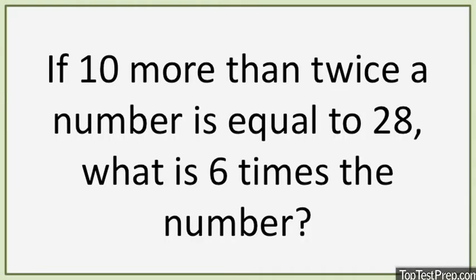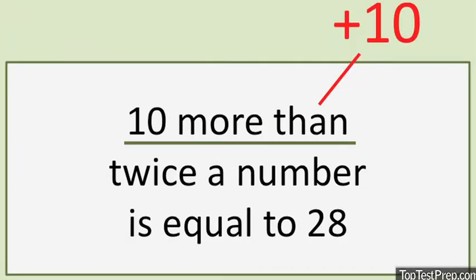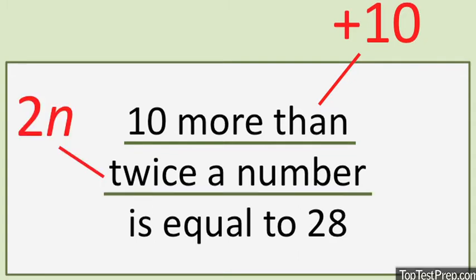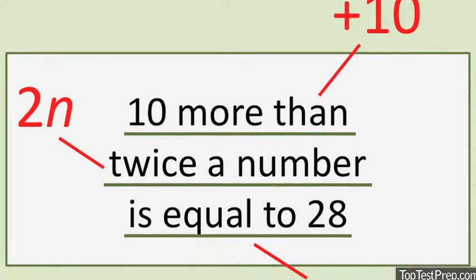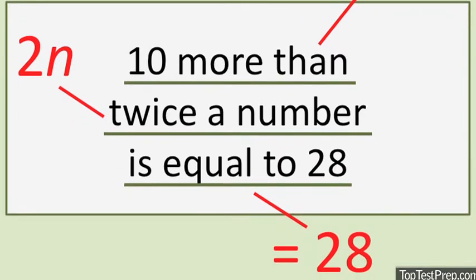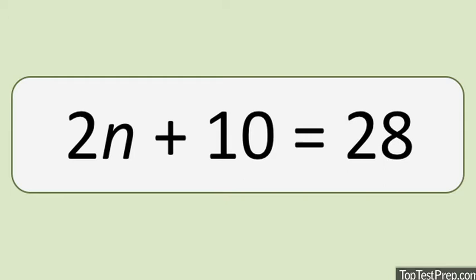Translating words into math, 10 more than means plus 10. Twice a number in algebraic terms means 2n. And the last bit translated into math means equals 28. Written as an equation, we have 2n plus 10 equals 28.